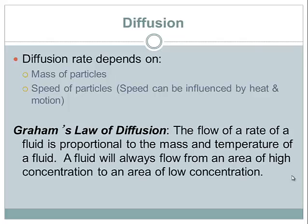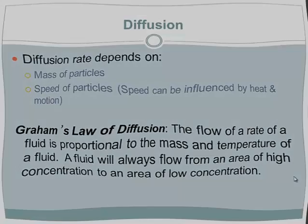Like heat, a fluid will always flow from an area of high concentration to an area of low concentration — just as heat always goes from high energy to low energy. In gases and liquids, particles diffuse from high concentration where they're packed closely together to low concentration where they can spread out. This concludes our notes for today. Tomorrow in the lab we'll talk briefly about diffusion and Brownian motion and look at how diffusion rates occur. See you tomorrow.